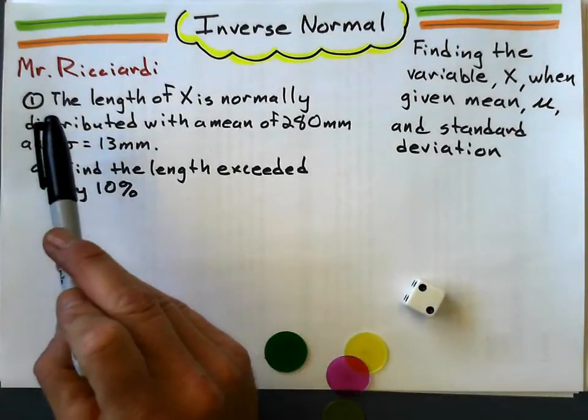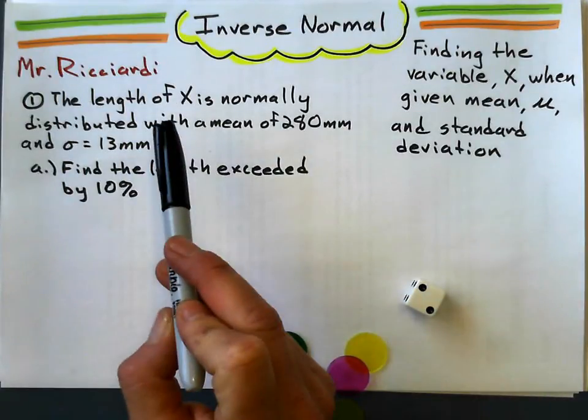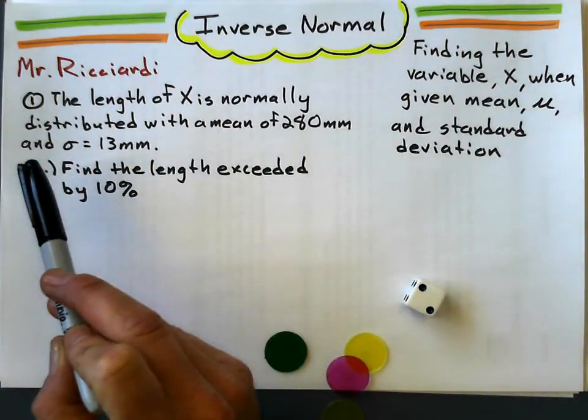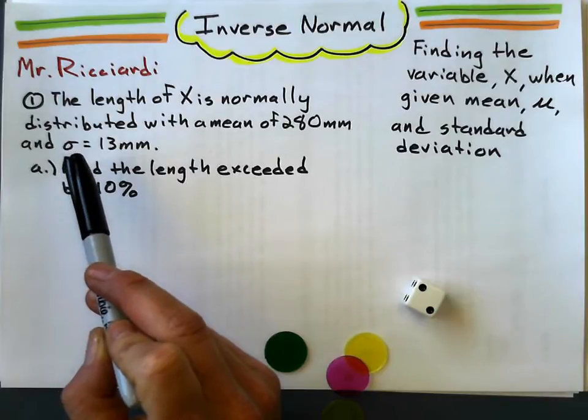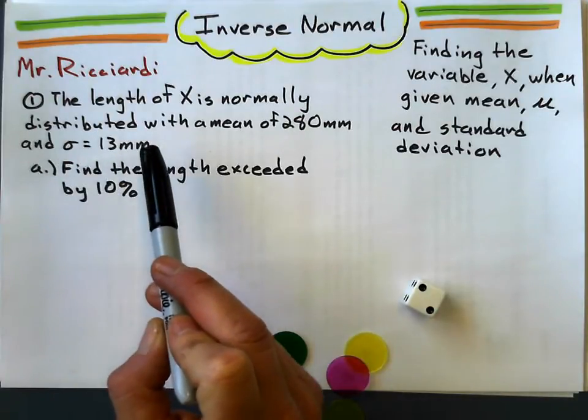Let's look at this problem. The length of X is normally distributed with a mean of 280 millimeters and standard deviation, that's what that symbol is, sigma, of 13 millimeters.